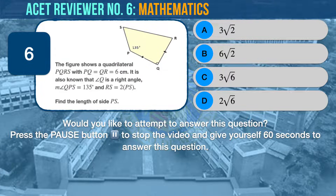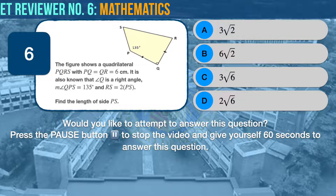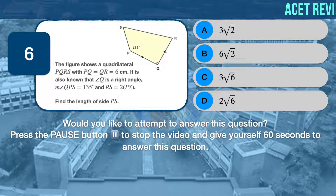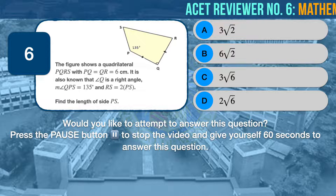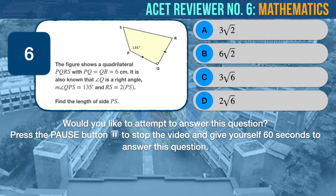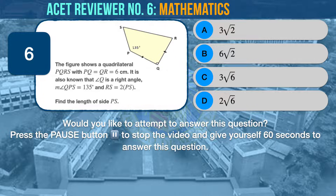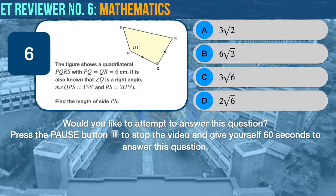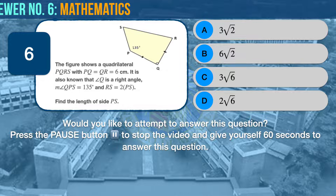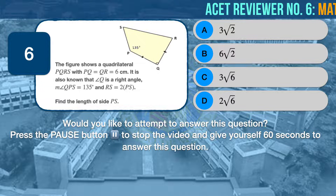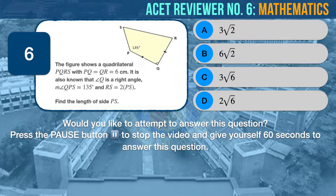Math question number 6. The figure shows a quadrilateral PQRS, with the length of side PQ being equal to the length of side QR, which is equal to 6 cm. It is also known that angle Q is a right angle. Angle QPS measures 135 degrees, and the length of side RS is twice the length of side PS. Find the length of side PS. A, 3 times the square root of 2; B, 6 times the square root of 2; C, 3 times the square root of 6; D, 2 times the square root of 6.